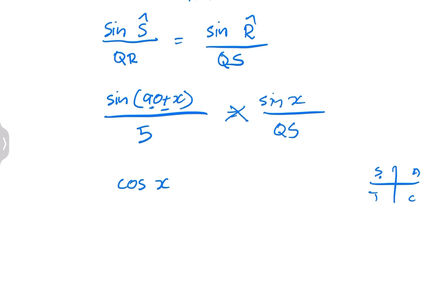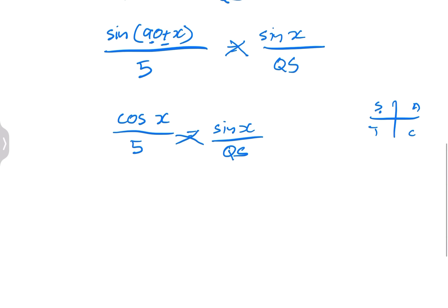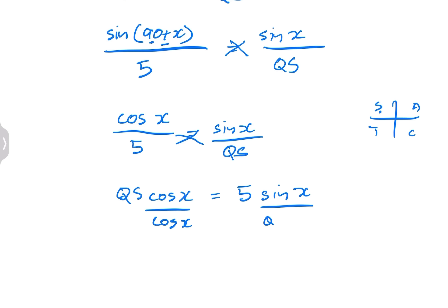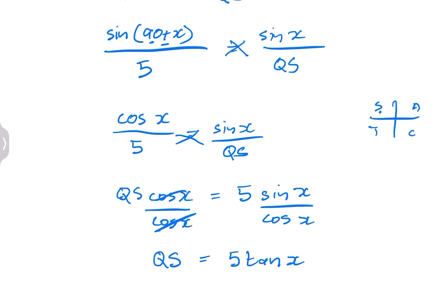So that gives us cos X over five equals sine X over QS. So we have QS times cos X equals five sine X. We can divide both sides by cos X. So QS equals five times sine over cos, which is tan — so that's 5 tan X. So we've proven that.